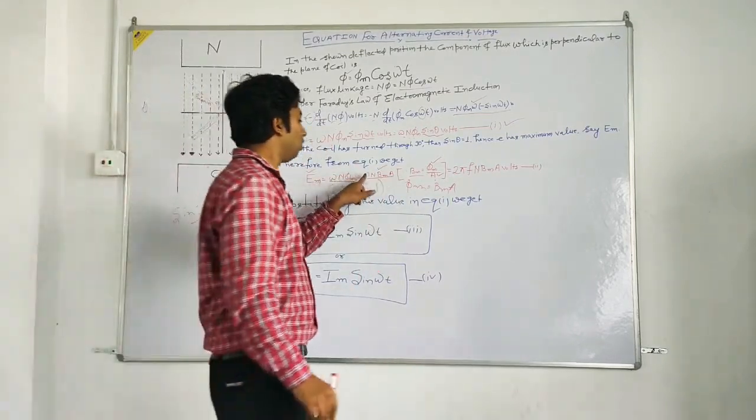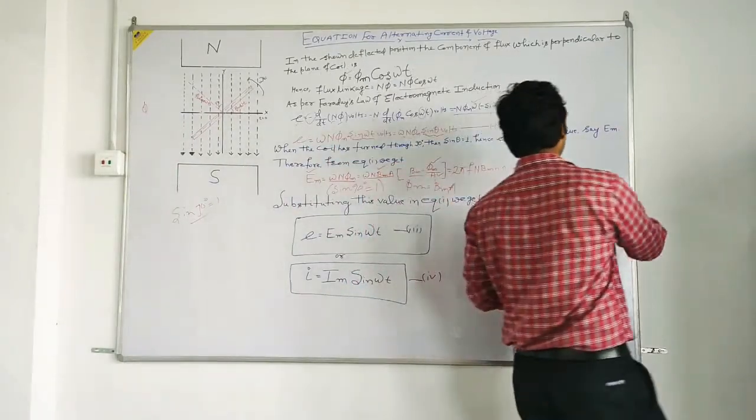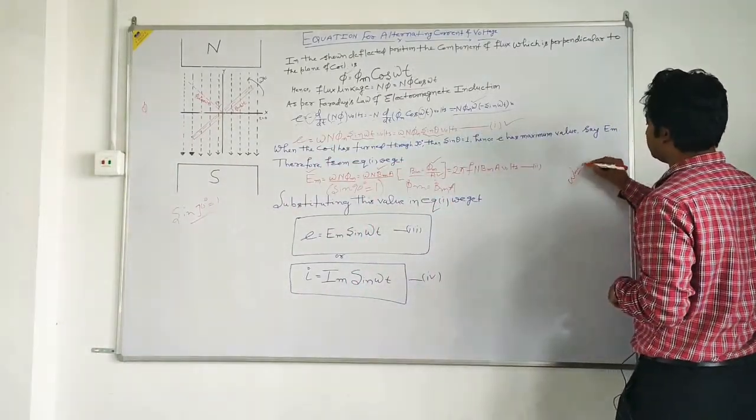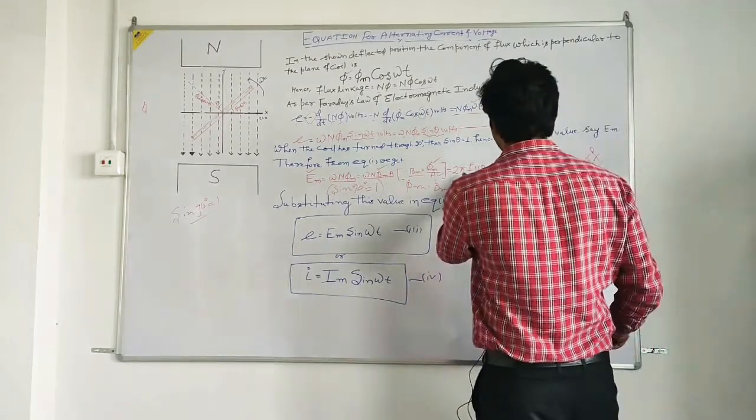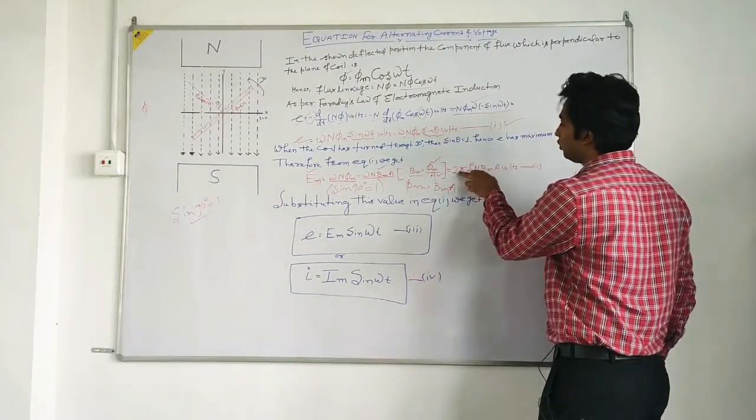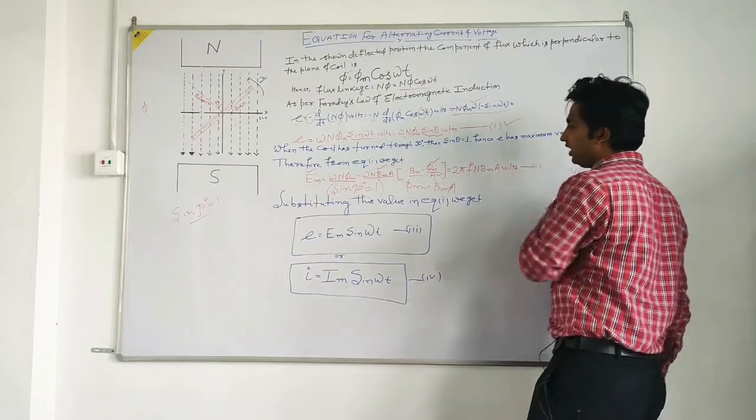Further as we know omega is the angular velocity and the value of omega is equal to 2 pi f. So omega equal to 2 pi f. So 2 pi f n bm sin omega t.